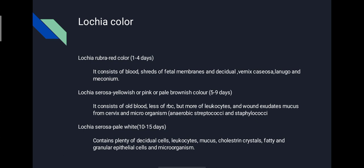Lochia alba is pale white in color and persists for 10 to 15 days. It contains plenty of residual cells, leukocytes, mucus, cholesterin crystals, fatty and granular epithelial cells, and microorganisms.